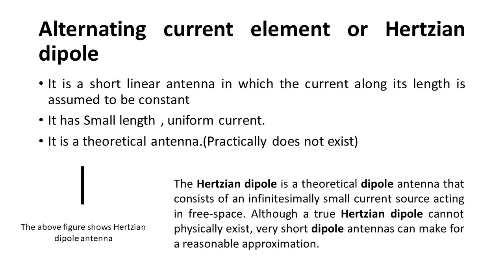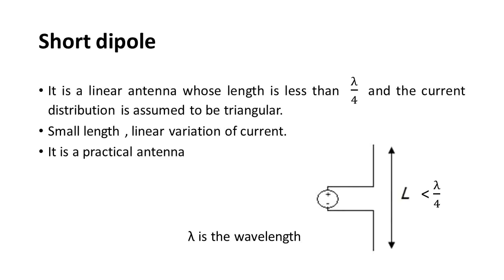The first one is the alternating current element or Hertzian dipole. It is a short linear antenna in which the current along its length is assumed to be constant. It is small in length with uniform current. It is a theoretical antenna and practically does not exist.